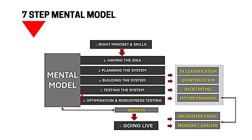We start with mindset and skills, then having the idea, planning the system, building the system, testing the system, and optimization and robustness testing. Mindset and skills come first — you should have those in place before doing this sort of work. Once we've gone through steps two to six we get some results. We do further testing, optimization, robustness, forward testing, and once we're happy we go live — with an incubation phase of maybe two to three months of live trading before scaling up.